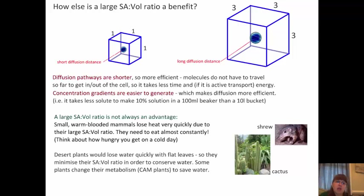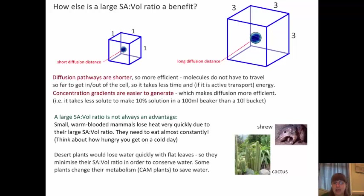A large surface area to volume ratio is not always a good thing. There are some small warm-blooded mammals that lose heat very quickly because they have a large surface area to volume ratio, and because of this they need to eat almost constantly — a great example is a shrew. Also, desert plants lose water quickly if they have flat leaves, so they've learned to minimize their surface area to volume ratio in order to conserve water.